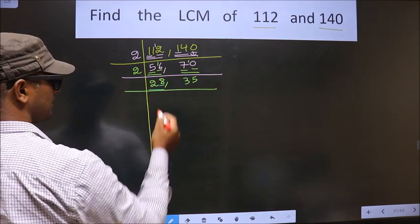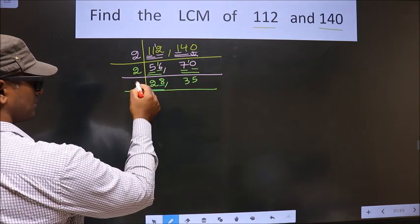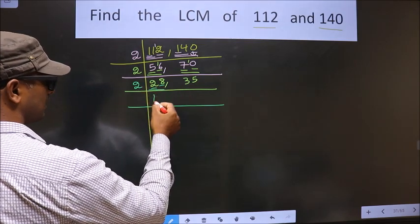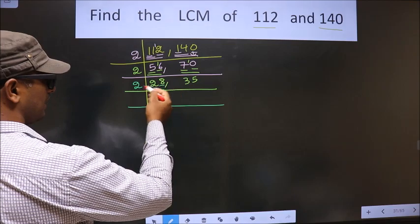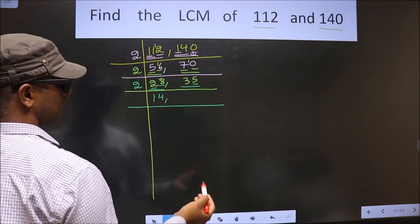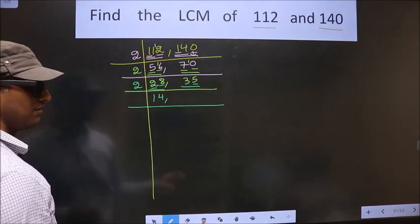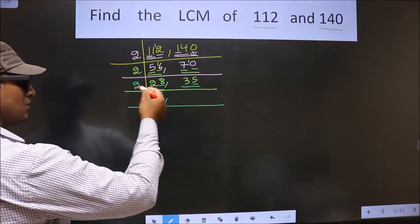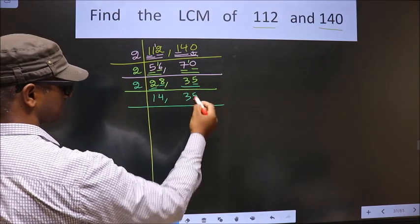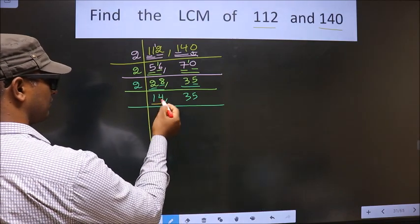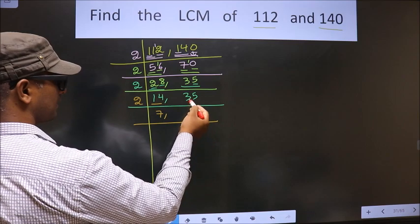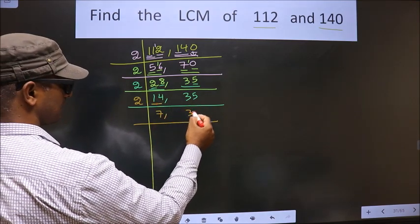Now the last digit is 8, which is even, so we take 2 here. The first number is 2; we get 2 in the 2 table at 2 × 1 = 2. Next number is 8; we get 8 in the 2 table at 2 × 4 = 8. For the other number, the last digit is 5, which is not even, so this number is not divisible by 2 — write it down as it is.